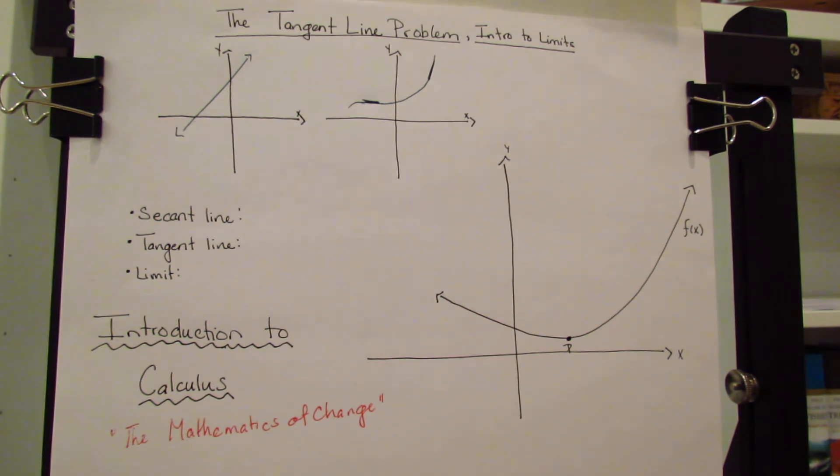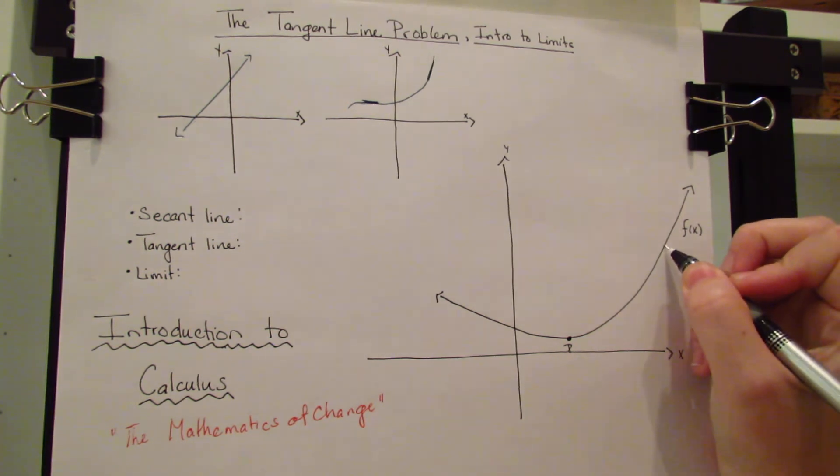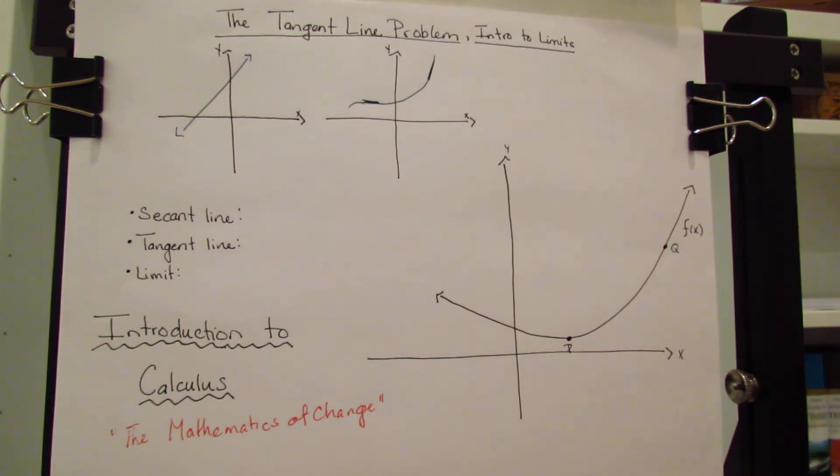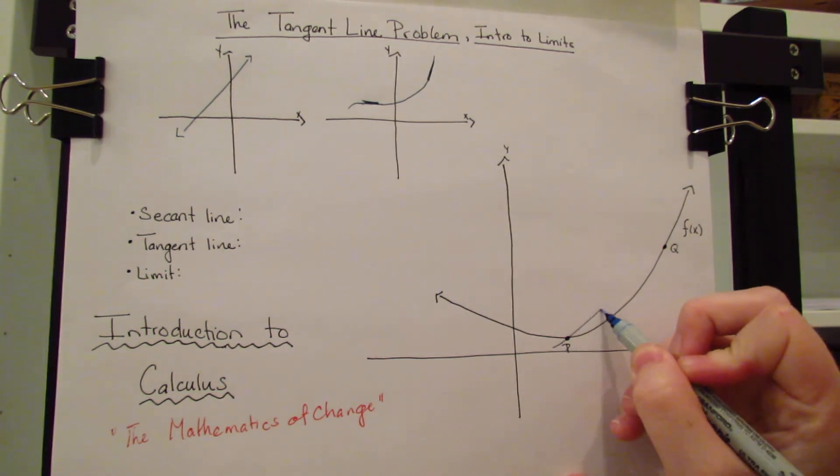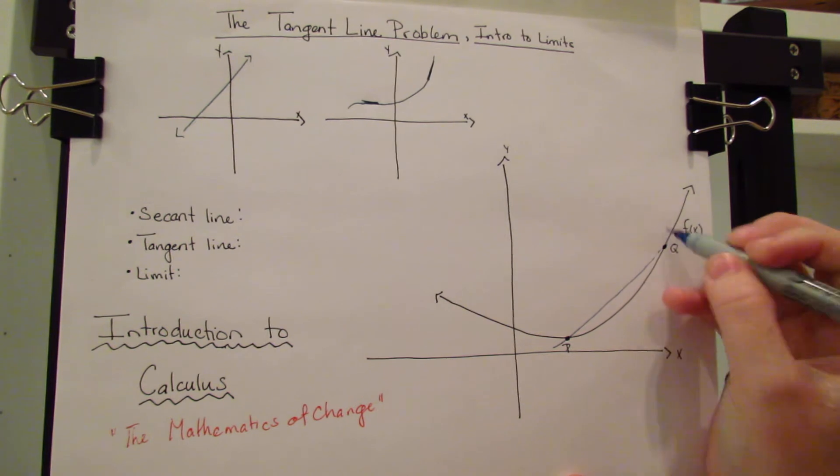So let's pick a point over here. Call it Q. If we draw a line, draw a straight line from P to Q.